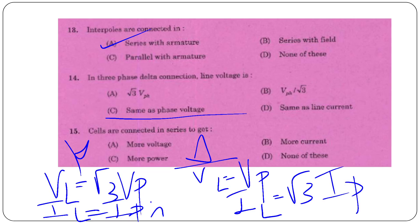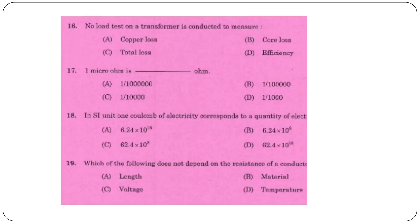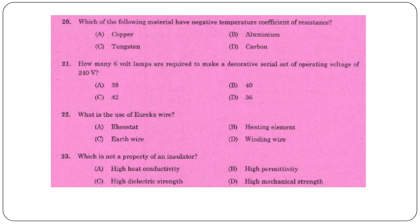Cells are connected in series to get more voltage. Test transformer is conducted to measure core loss. 1 micrometre = 1×10⁻⁶. 1 coulomb of electricity corresponds to 6.24×10¹⁸ electrons. Resistance of a conductor does not depend on voltage. For decorative serial set at 240V using 6V lamps: 240 ÷ 6 = 40 lamps.